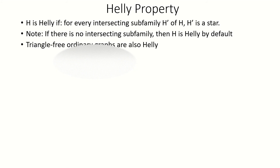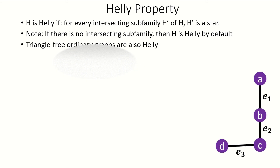Also, any triangle-free ordinary graph interpreted as a two-uniform hypergraph is heli, as the only intersecting subfamilies would be spanning subgraphs containing just two edges where those two edges share an endpoint. Any one of those intersecting subfamilies must be a star, as the shared endpoint would be present in all edges of that spanning subgraph.